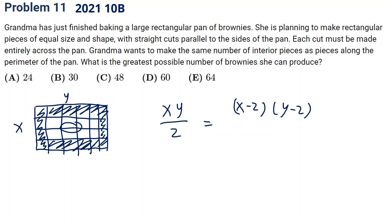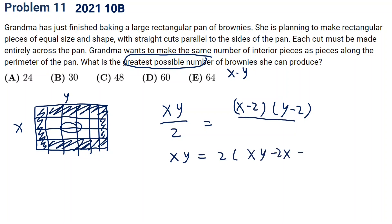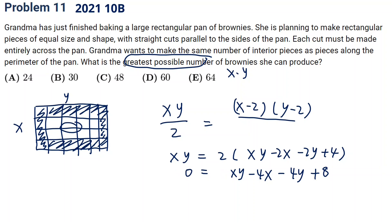We need to find the greatest possible value of x times y, where x and y are integers. Setting up the equation: xy equals 2 times (x minus 2)(y minus 2). Expanding: xy equals 2xy minus 4x minus 4y plus 8. Cancelling one xy, we get xy minus 4x minus 4y plus 8 equals 0.